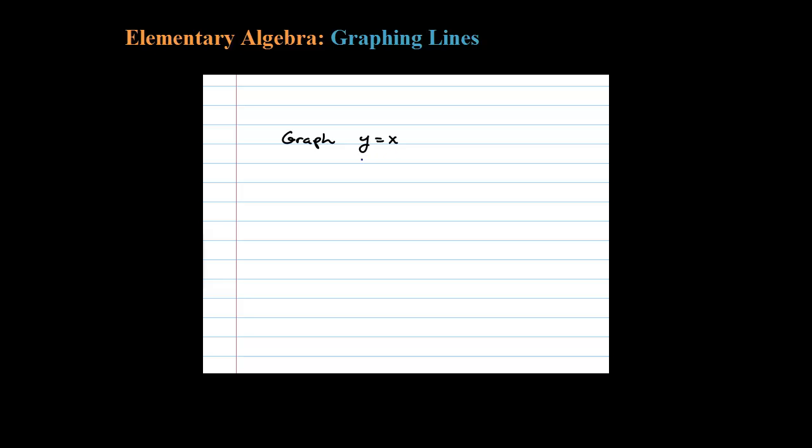Here we're asked to graph y = x. We actually graphed this in the previous section, but here they want us to graph it because it's in slope-intercept form. Let's think of this as y = 1x + 0.